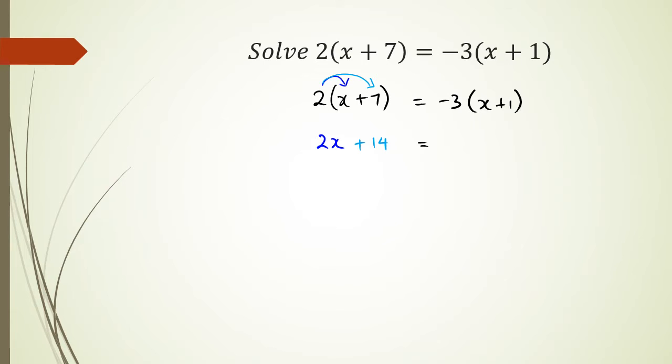And this equals negative 3 times x which is negative 3x and negative 3 times positive 1 which is negative 3. Now this should look a bit more familiar because this is pretty much what we talked about in the last video in this series.